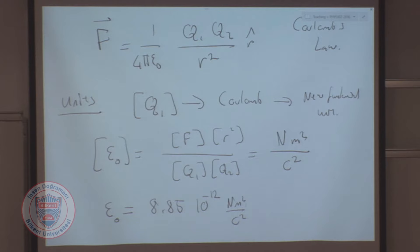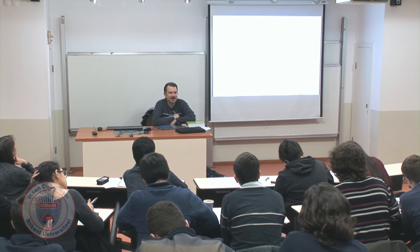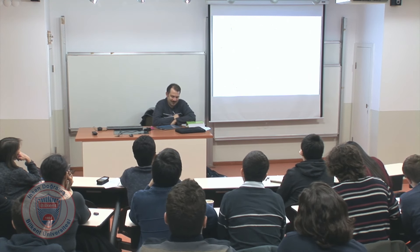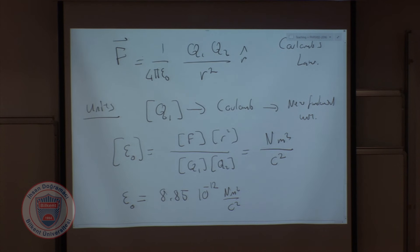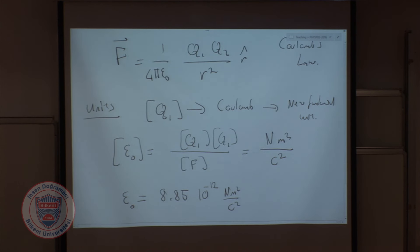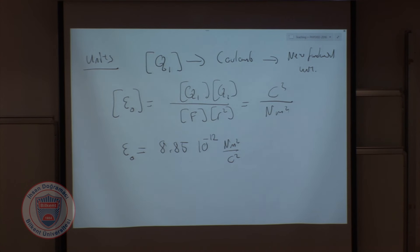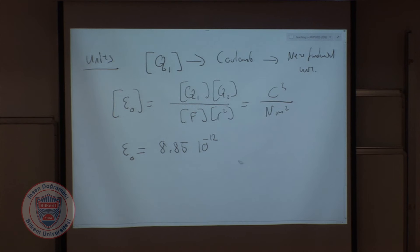If you're going to spend the whole term with me, you have to be more alert — I very commonly make mistakes, and you should be able to stop me. There's a big mistake here! The units of ε₀ should be just the reverse: look at the formula — ε₀ equals Q1·Q2 divided by F·R², so it should be Coulomb squared divided by Newton·meter squared. Has anyone noticed I was doing something wrong? Why didn't you tell me? Always check my algebra.